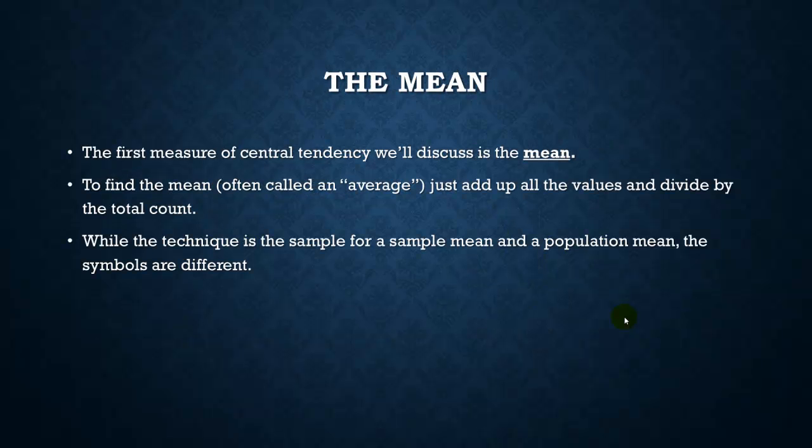So the first type of central tendency we'll talk about is the mean. While the mean is often called average by people, when everyday people say the word average, sometimes they're referring to the mean, and sometimes they're referring to something else. So just to be clear, instead of using the word average, we'll try to use the word mean instead. So to find the mean or the average, we're just going to add up all the values and divide by the total number of values. As far as symbols go, this technique is going to be the same whether you're talking about a sample mean or a population mean. But for a sample mean, we're going to use a different set of symbols than the population mean.